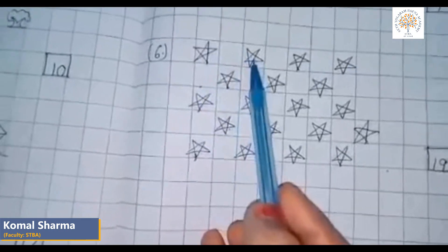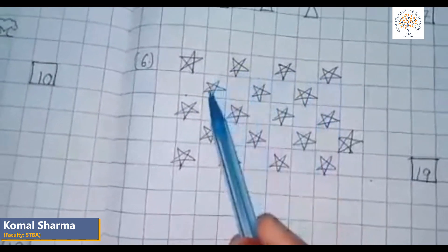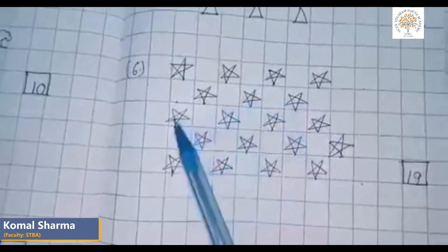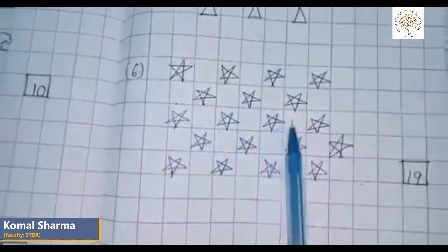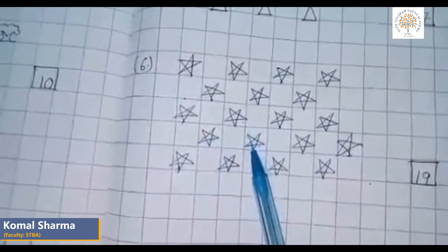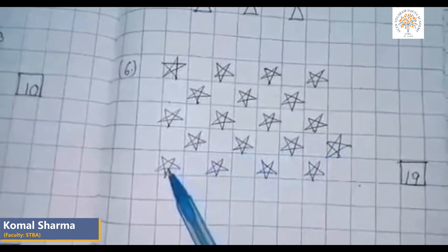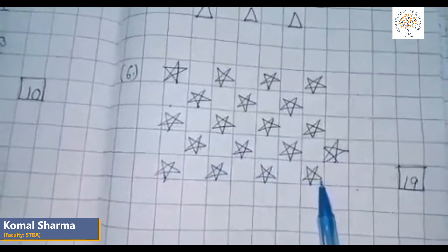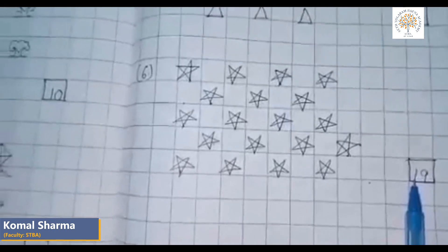Now we count pictures of stars: one, two, three, four, five, six, seven, eight, nine, ten, eleven, twelve, thirteen, fourteen, fifteen, sixteen, seventeen, eighteen, nineteen. So we write nineteen in the box.